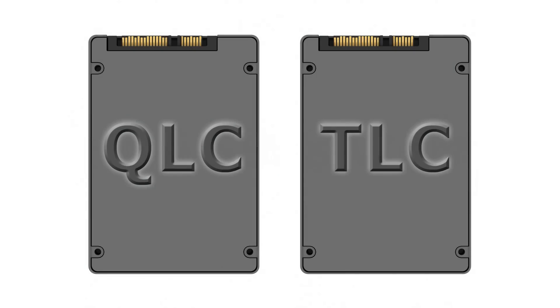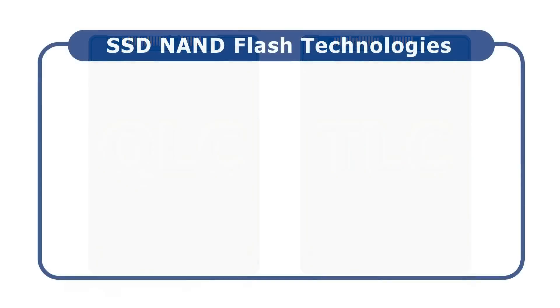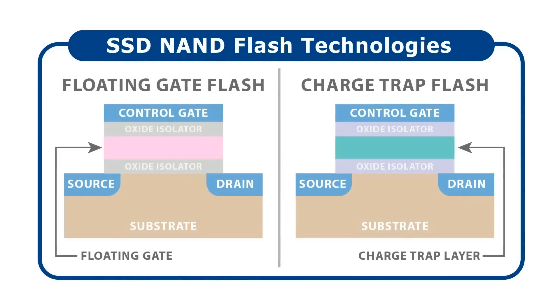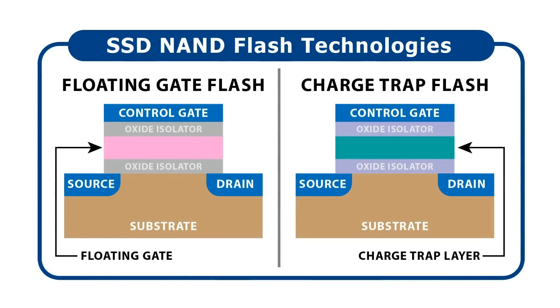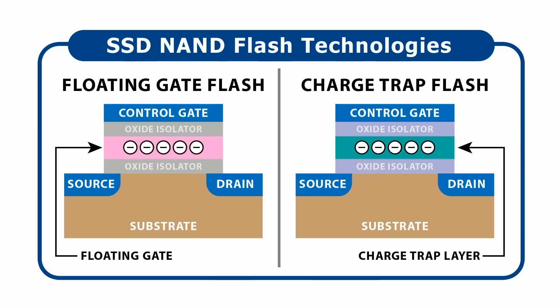To appreciate the differences between QLC and TLC, it's important to understand the basic operation of an SSD's NAND flash memory cells. Two technologies are commonly used, called floating gate and charge trap flash. To write or program data, a voltage is applied to move electrons into a floating gate or charge trap layer. The presence of these electrons changes the resistance between the memory cell's source and drain electrodes, and this can be measured by passing a current between them, allowing a data value to be read from the cell.